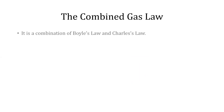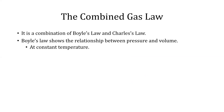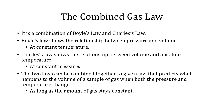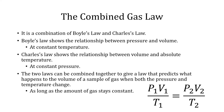The combined gas law is a combination of Boyle's Law and Charles's Law. Boyle's Law shows the relationship between pressure and volume at constant temperature. Charles's Law shows the relationship between volume and absolute temperature at constant pressure. The two laws can be combined to give a law that predicts what happens to the volume of a sample of gas when both pressure and temperature change, as long as the amount of gas stays constant. The combined gas law is P1 times V1 divided by T1 equals P2 times V2 divided by T2.